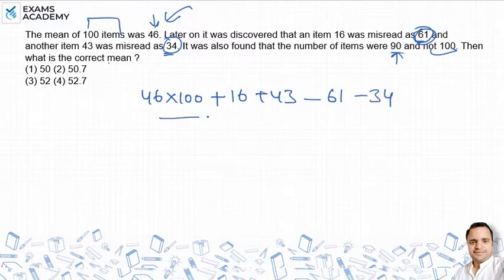For the correct mean, we divide by the correct number of items, which is 90.